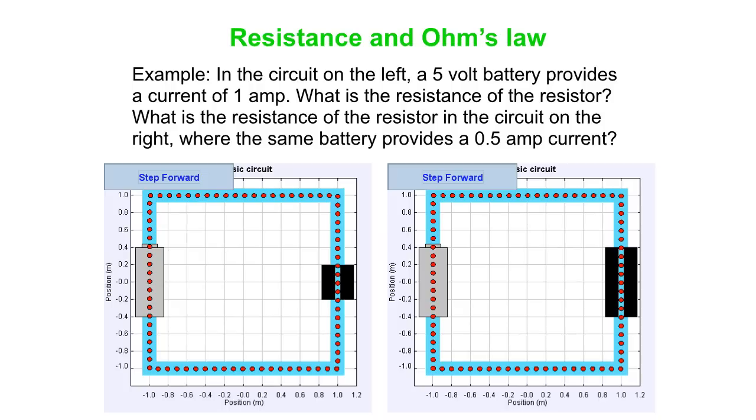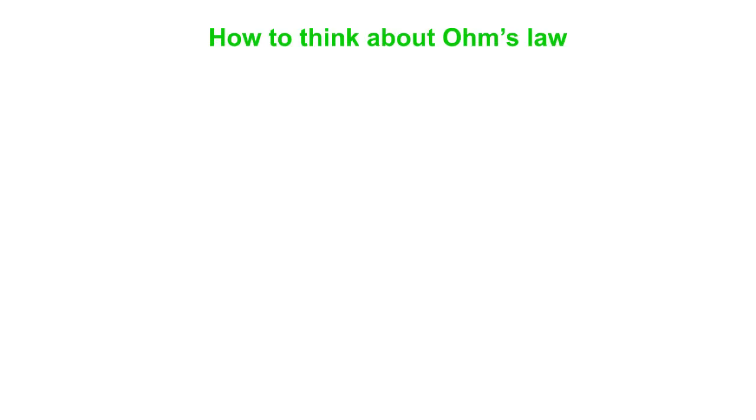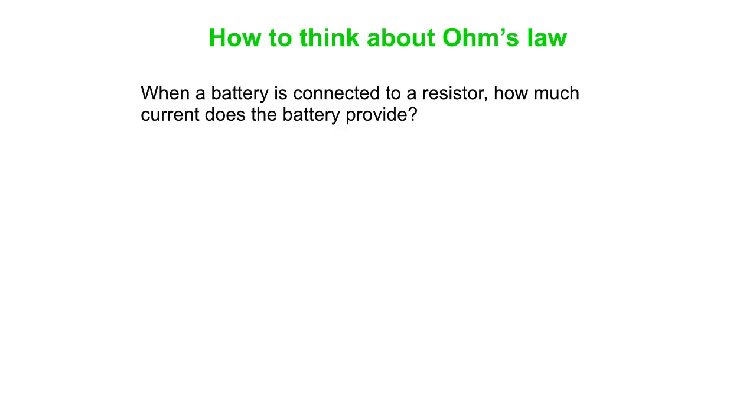Okay, so we can use our R is delta V over I equation in this example. We have a five volt battery on the left hand side, and it's providing a current of one amp. And that black thing is the resistor. It's providing some resistance to flow. You should be able to figure out that the resistance is five ohms in this circuit. On the right we then double the resistance. We make it twice as long, the resistor. So the resistance is twice as big. And we get half the current there. So we get ten ohms, five volts and ten ohms gets you half the current, half an amp of current. And this is a good way to think about Ohm's Law. If you have a battery connected to a resistor, how much current is provided? Well, you can do it like this. The current is the voltage divided by the resistance.